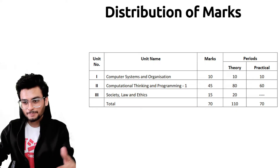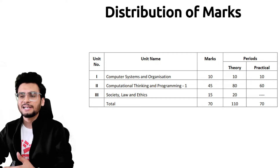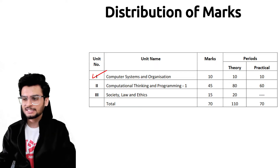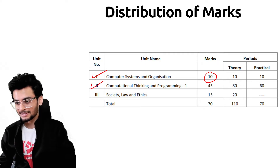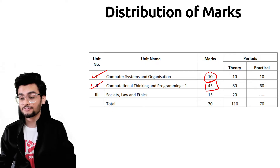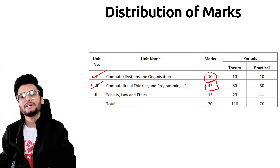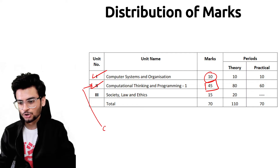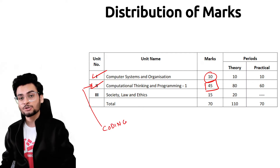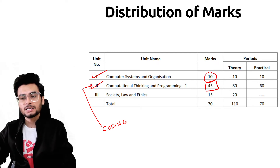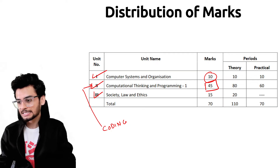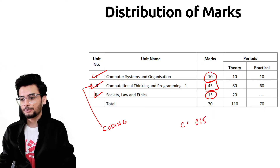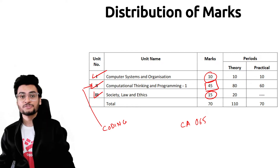Before we look at what the syllabus covers, let's understand the distribution of marks. Unit 1 — Computer Systems and Organization — is for 10 marks. Unit 2 — Computational Thinking and Programming — has the majority portion at 45 marks, split across Term 1 and Term 2. Unit 3 — Society, Law and Ethics — is for 15 marks. This is similar to cyber ethics from class 10th Computer Applications.